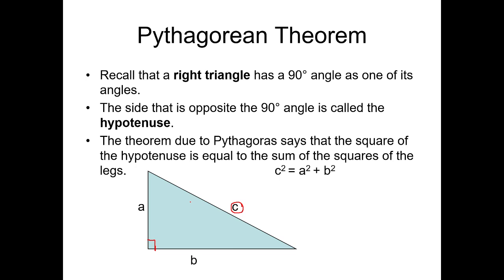And the theorem due to Pythagoras says that the square of the hypotenuse is equal to the sum of the legs. Therefore, we have derived the formula C squared is equal to A squared plus B squared.